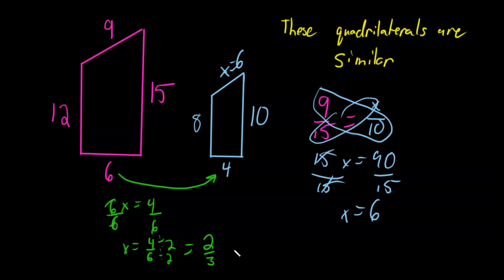2 over 3 is our scale factor. What that means is that for any of these corresponding sides, 12 times 2 thirds gives me 8, 6 times 2 thirds gives me 4, 9 times 2 thirds gives me 6, 15 times 2 thirds gives me 10. So that is our scale factor, 2 thirds.